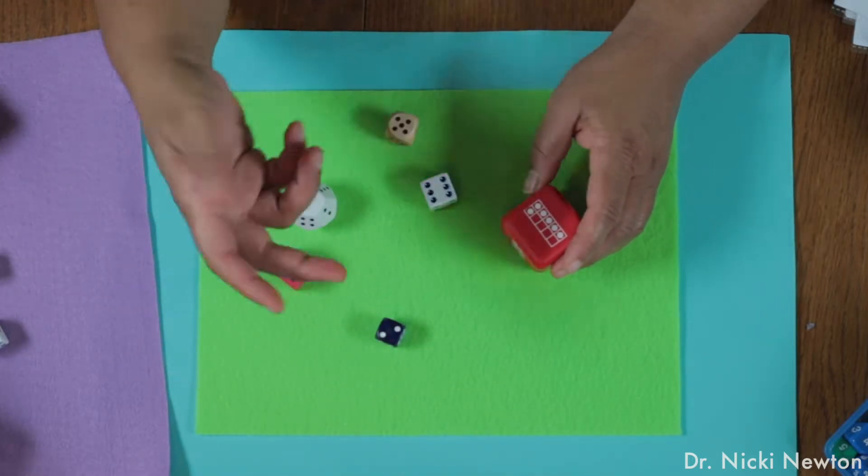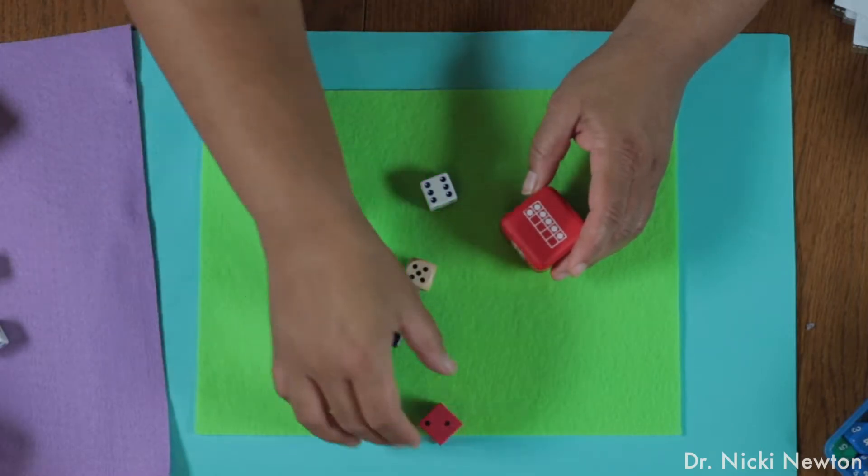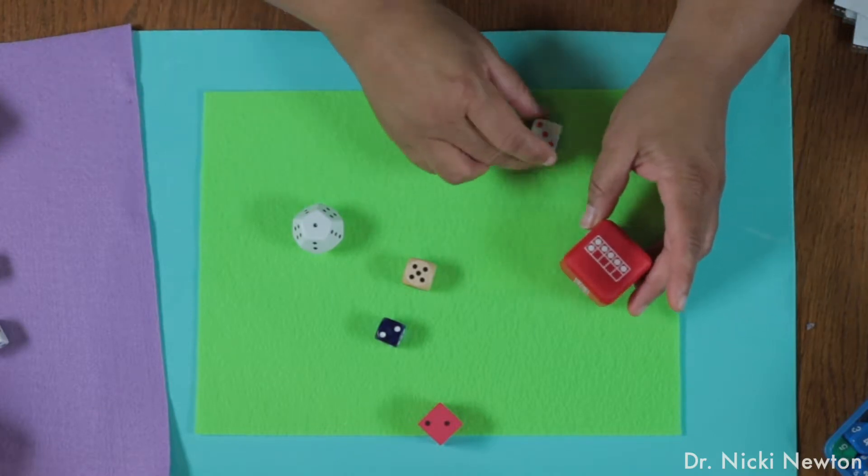So the teacher would roll the dice and then the kids would say two. The goal is to see it and say it quickly. So this one is five, or this one is two, or this one is one, or this one is three.